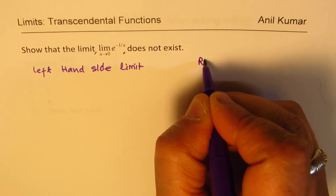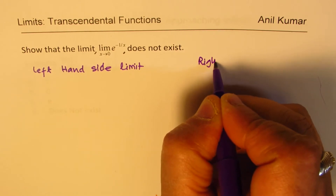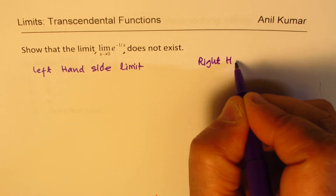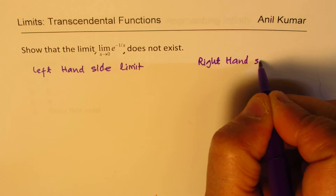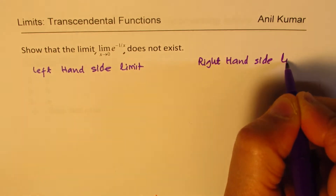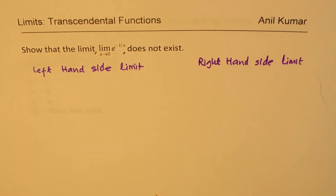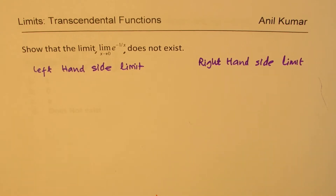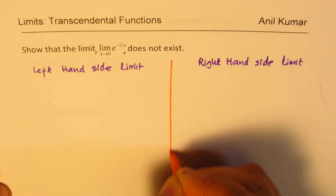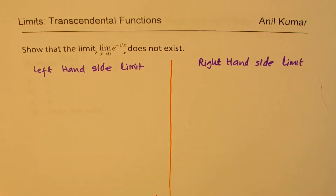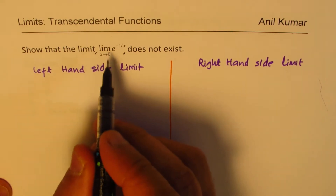And then we also have to check what happens when we approach from the right-hand side. Whenever we are approaching 0, these are two critical things which we need to consider. The approach I am going to take here will help you solve many similar questions. So let's see what happens when we look at it from the left-hand side.